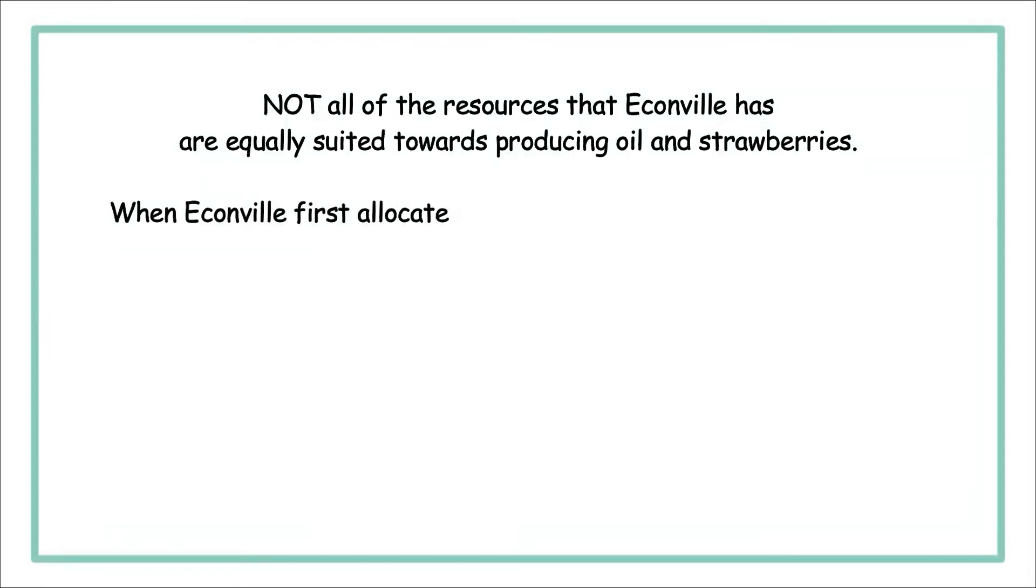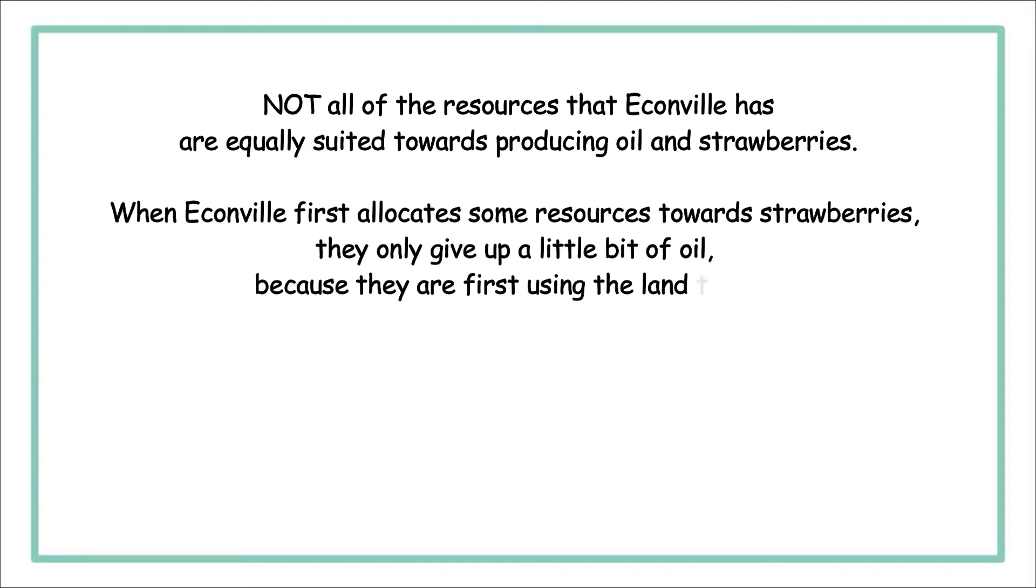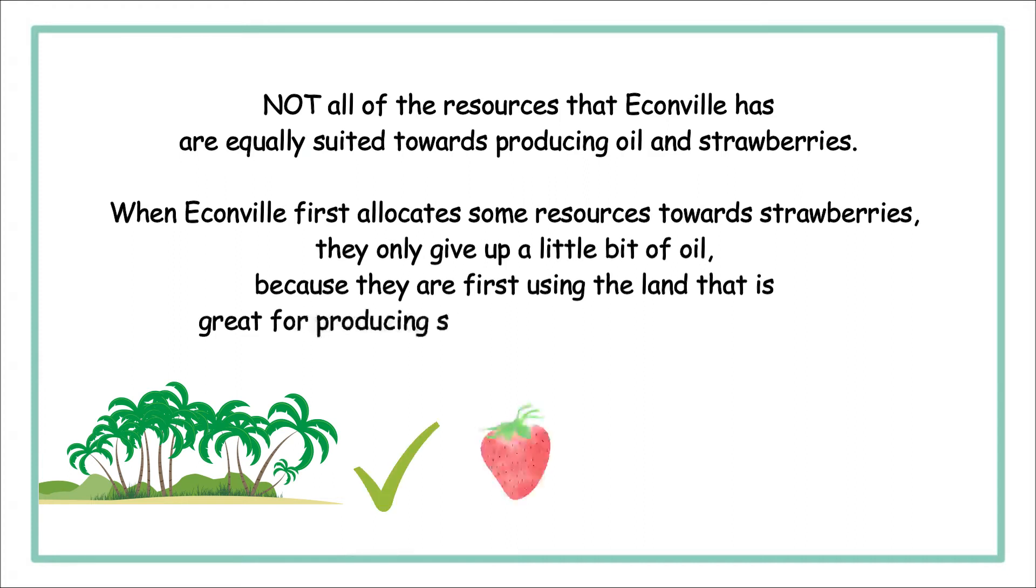This is because not all of the resources that Econville has are equally suited towards producing oil and strawberries. When Econville first allocates some resources towards strawberries, they only give up a little bit of oil, because they are first using the land that is great for producing strawberries, but terrible for oil.